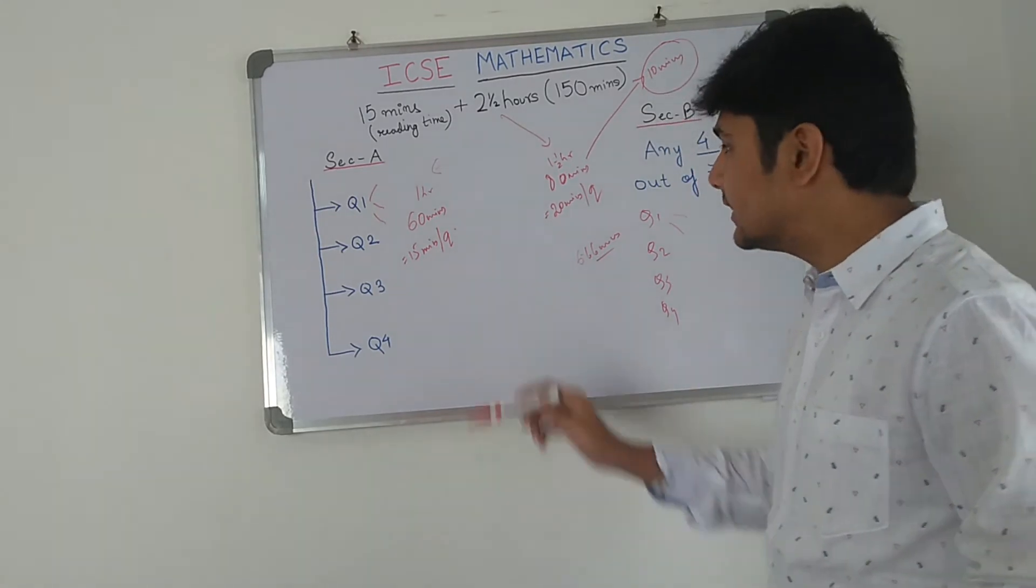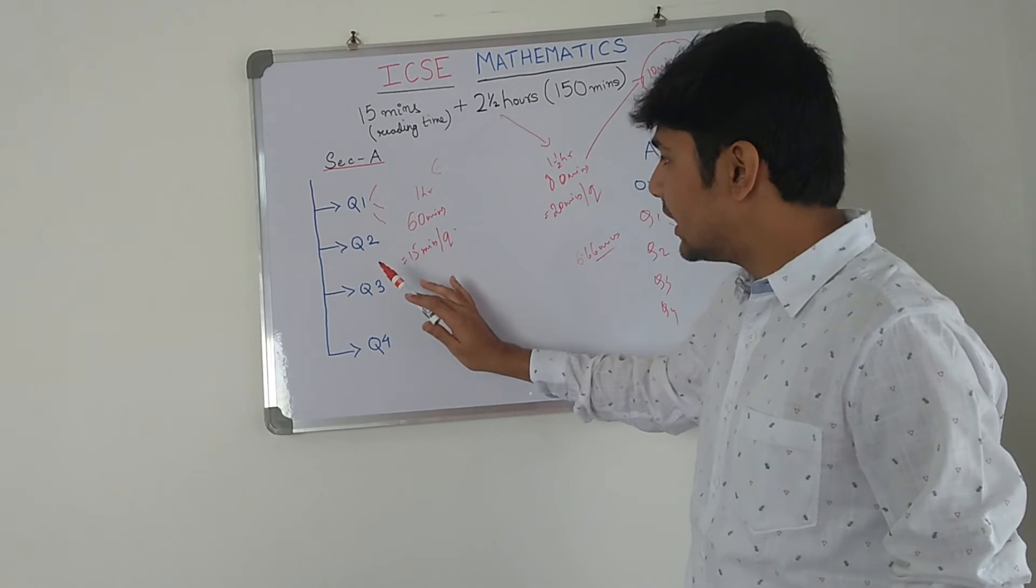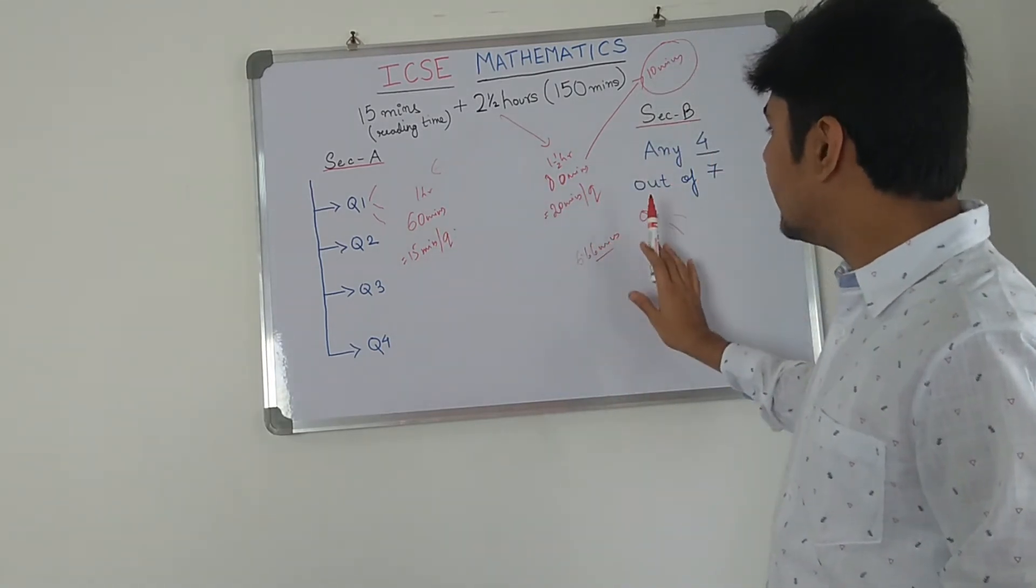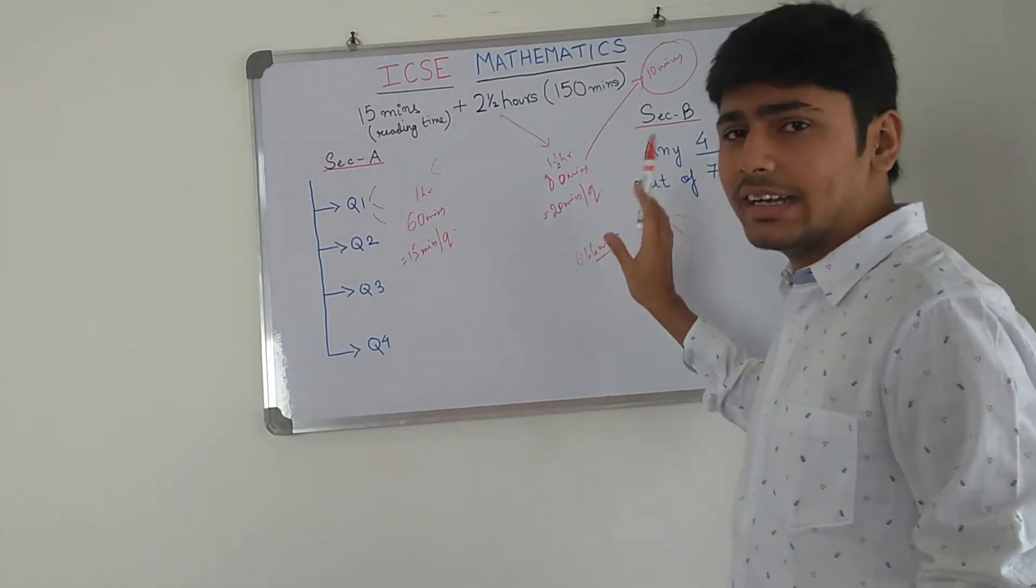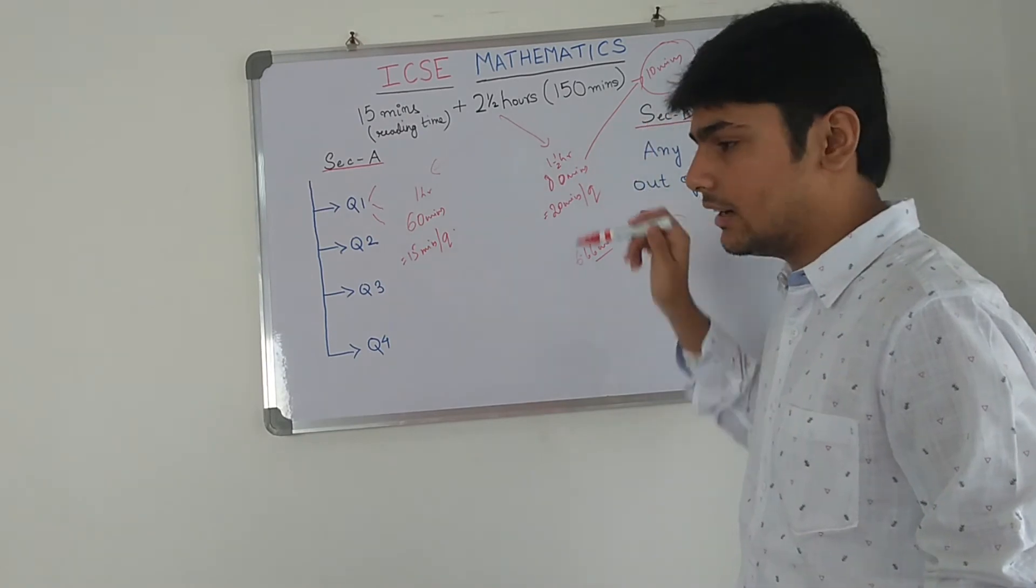So, to conclude - what we get? We get 60 minutes for section A, 80 minutes for section B, plus 10 minutes for your paper checking.